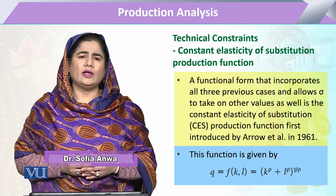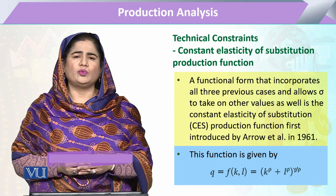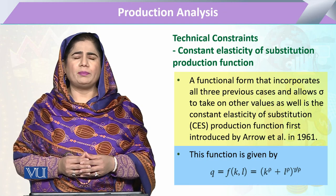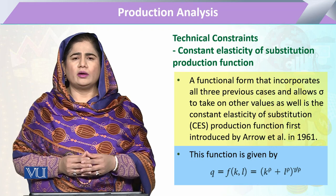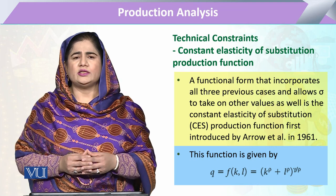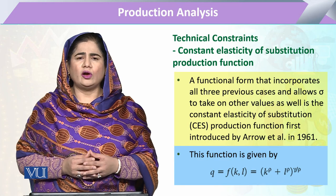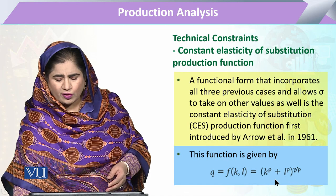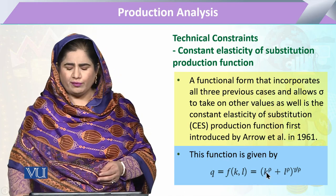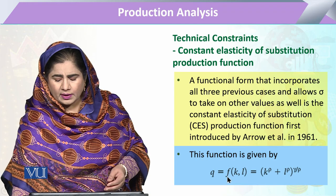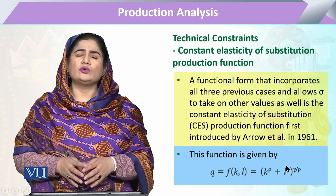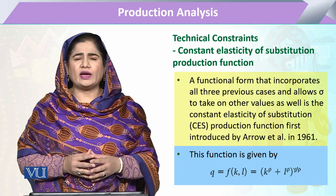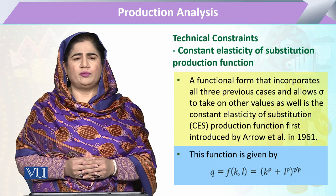The output is a function of capital and labor. Capital and labor have their respective elasticities of production, not only in the form of their power. Here, K has the power of rho and labor again has the power of rho, but the whole function has the collective power of gamma divided by rho.